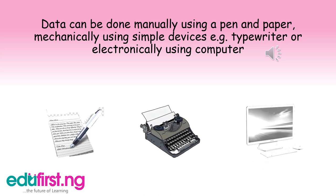Now, what are the things we can use for processing data? Data can be processed manually using a pen and paper, or mechanically using a typewriter, and it can be done electronically using a computer system.